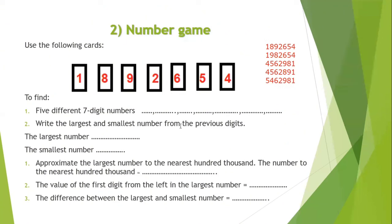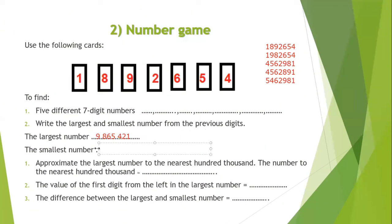Number 2: write the largest and the smallest number from the previous digits. For the largest number, I start with the largest digit in the largest place value. So: 9, 8, 6, 5, 4, 2, 1 — giving 9,865,421. For the smallest number, I start with the smallest digit: 1, 2, 4, 5, 6, 8, 9 — giving 1,245,689.